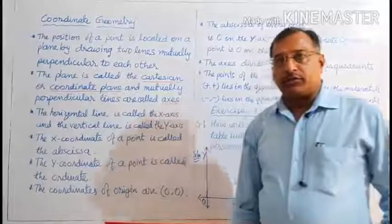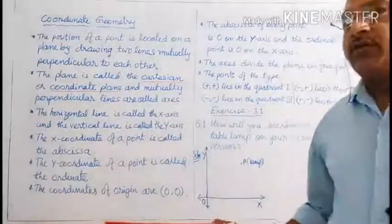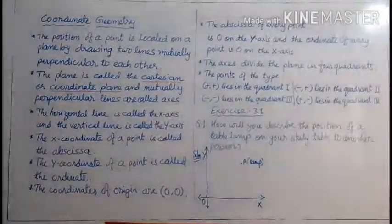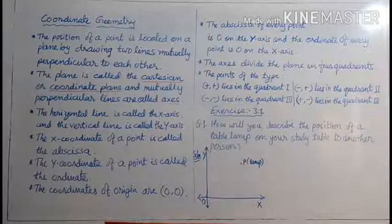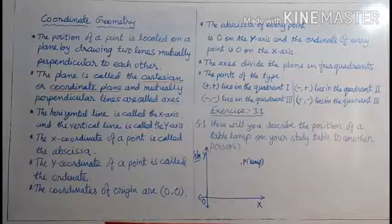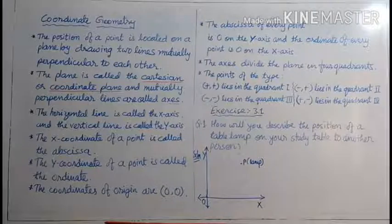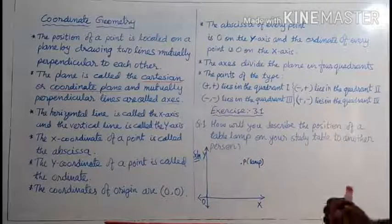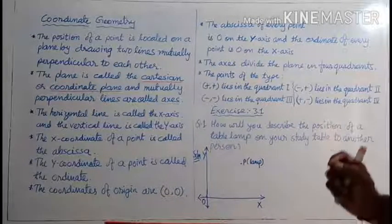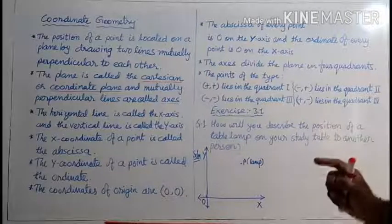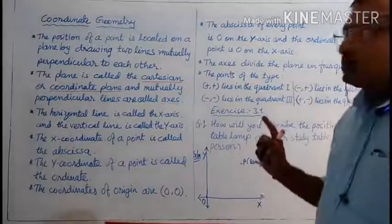What do you mean by Coordinate Geometry? Coordinate Geometry is the branch of Mathematics in which geometric problems are solved using a Coordinate System.